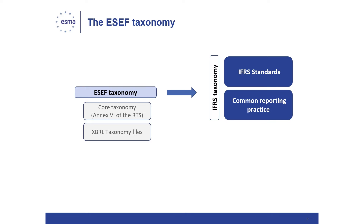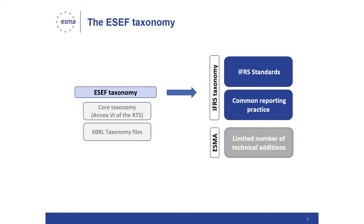The IFRS taxonomy elements stem from two sources: IFRS standards and common reporting practice elements. The IFRS taxonomy reflects the presentation and disclosure requirements of the IFRS standards as issued by the International Accounting Standards Board, including accompanying guidance, examples materials, and elements reflecting IFRS practice statement management commentary. The common practice elements are concepts not specifically mentioned in IFRS standards but consistent with them, found to be frequently disclosed across a range of companies and accounting jurisdictions. Furthermore, the ESEF taxonomy includes a limited number of ESMA technical additions to the IFRS taxonomy.